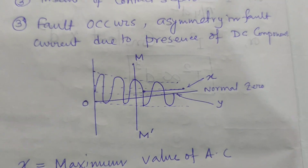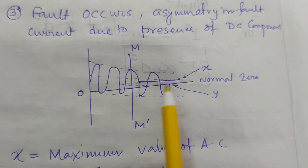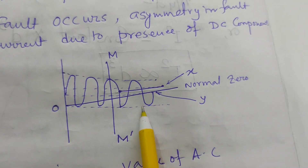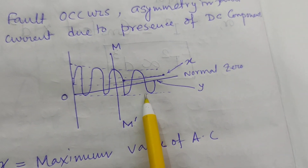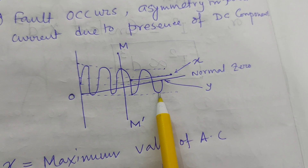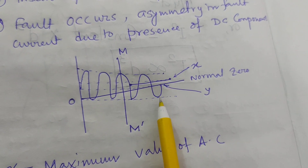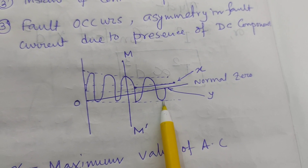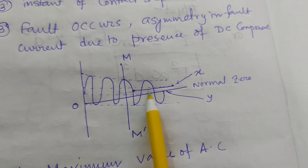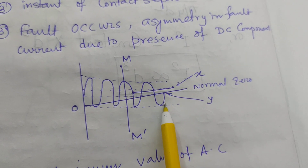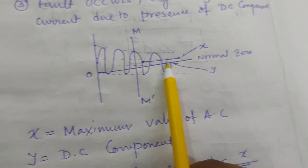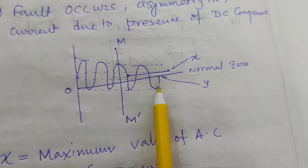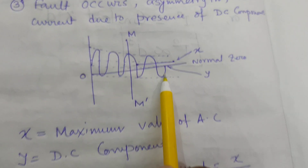If we look at this diagram, when some fault has occurred, the deterioration of the waveform will be present. If the deterioration of the waveform is there, then some problem will start. That problem is called the Asymmetrical Component and the Symmetrical Component. Both asymmetrical and symmetrical components of the fault current will occur.